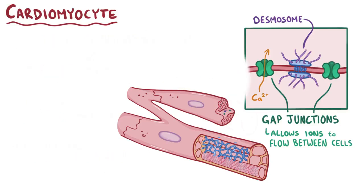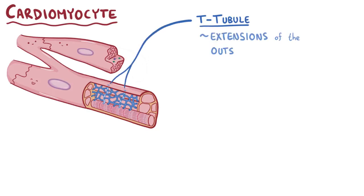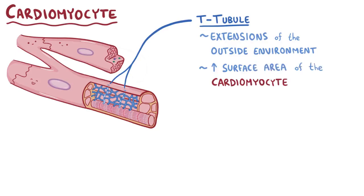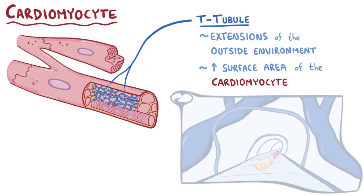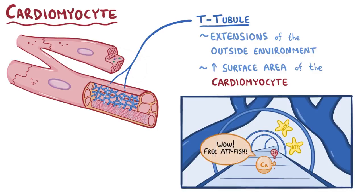Another feature of cardiomyocytes are passageways called transverse tubules, or T-tubules. T-tubules are extensions of the outside environment. They increase the surface area of the cardiomyocyte and they look like the letter T, so it's relatively easy to remember their name. Think of a large walkthrough aquarium — you can walk through those tunnels and look at the sea creatures all around you, but you're not in the water with them.